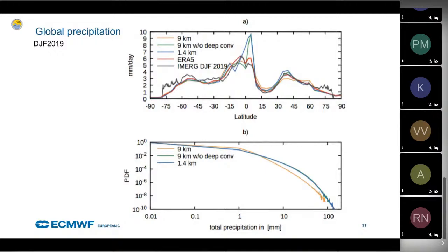The precipitation PDF shows a shift: lower-resolution simulations have more precipitation at smaller amounts and substantially more events with very large precipitation at the high end. This shift in the distribution of precipitation intensity appears particularly pronounced in the equatorial region.